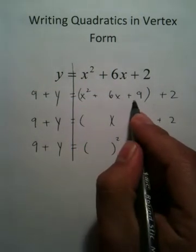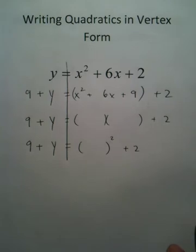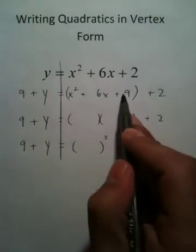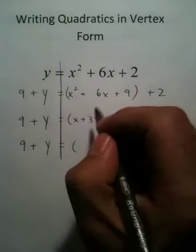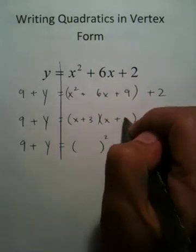Now you're going to factor this using the magic x. Now you can use scratch work and whatnot, but basically after you factor this, you're going to get an x plus 6—excuse me—an x plus 3, and an x plus 3.